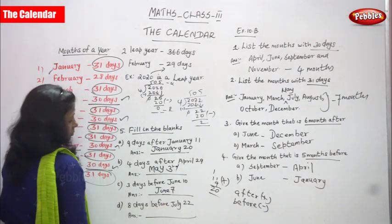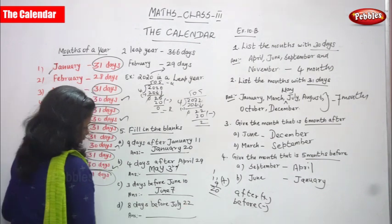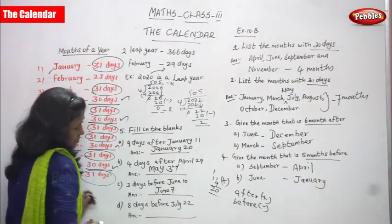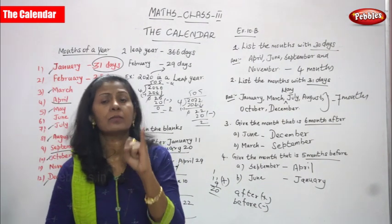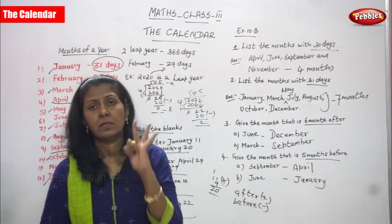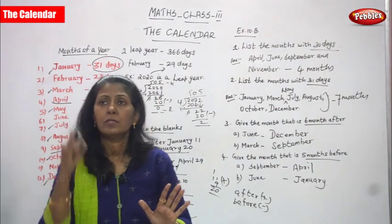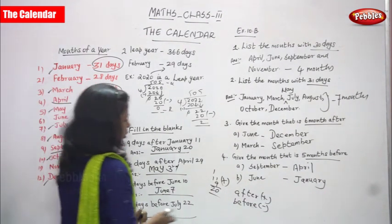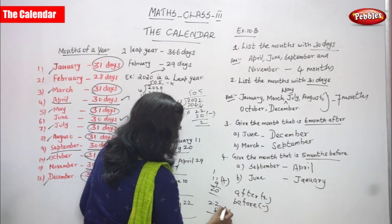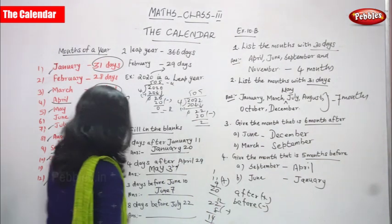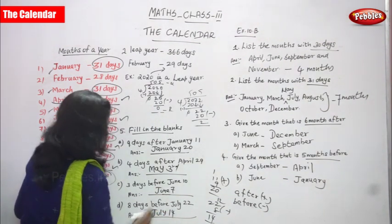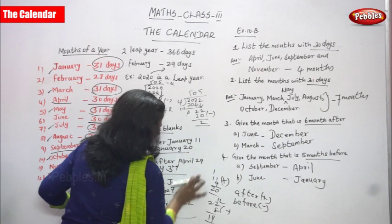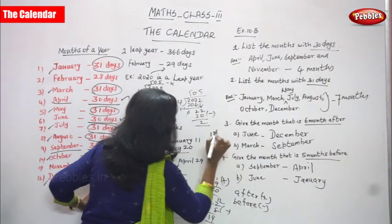8 days before July 22. 'Before' means subtraction, so you should not consider July 22. Count back: July 21, 20, 19, 18, 17, 16, 15, 14. The answer is July 14. Simply: 22 minus 8 equals 14, so July 14 is the answer.